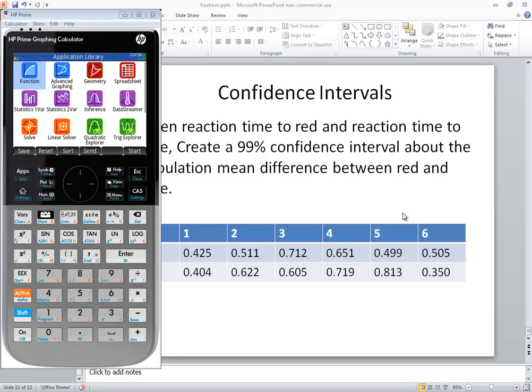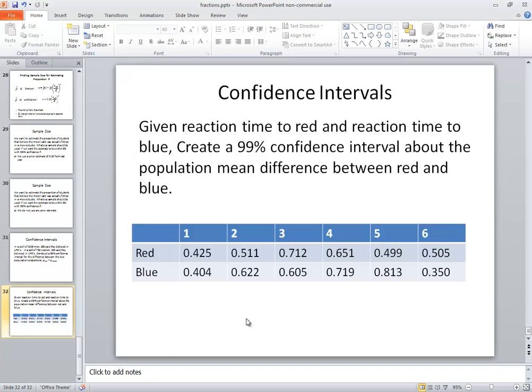Let's take a look at finding confidence intervals about the population mean difference between matched pair of data. Let's take a look at this example. Given reaction time to red and reaction time to blue, create a 99% confidence interval about the population mean difference between red and blue. Then we've got some red values and then we've got some blue values.